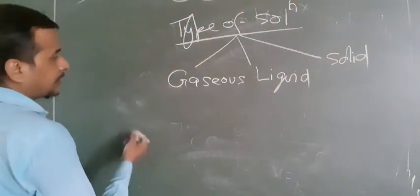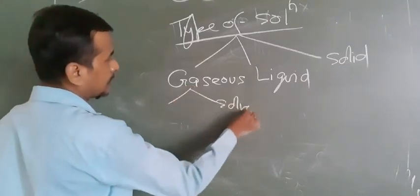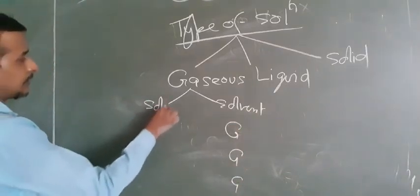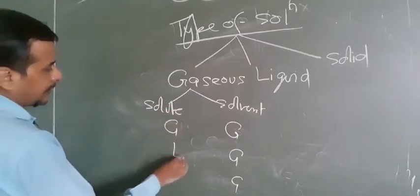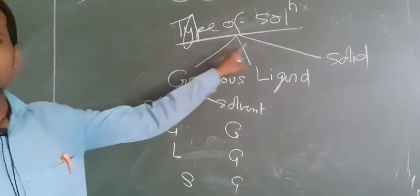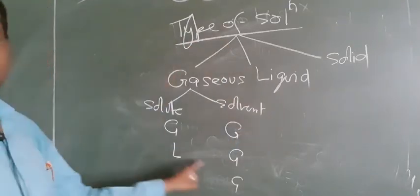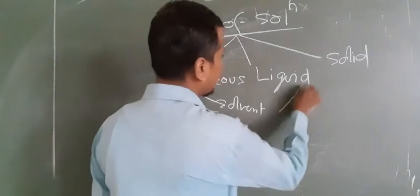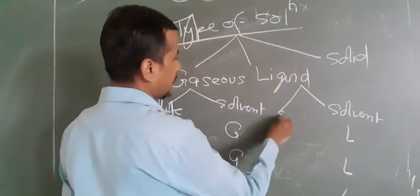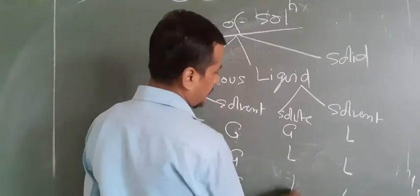These three types each have 3 sub-categories based on the state of solute and solvent. In gaseous solutions, the solvent is always in the form of gas, but the solute may be gas, liquid, or solid. Similarly for liquid solutions, the solvent is liquid, but the solute may be gas, liquid, or solid.